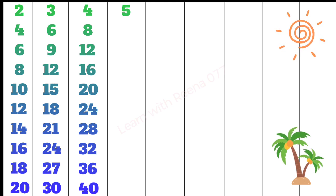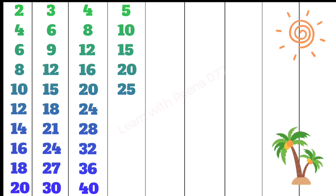5 1s are 5, 5 2s are 10, 5 3s are 15, 5 4s are 20, 5 5s are 25.